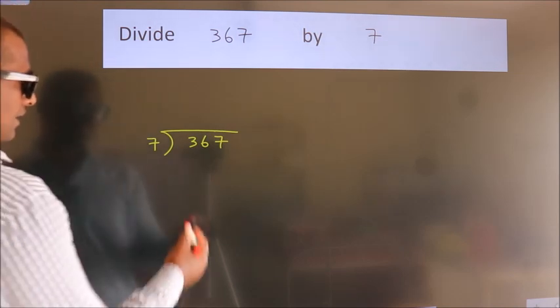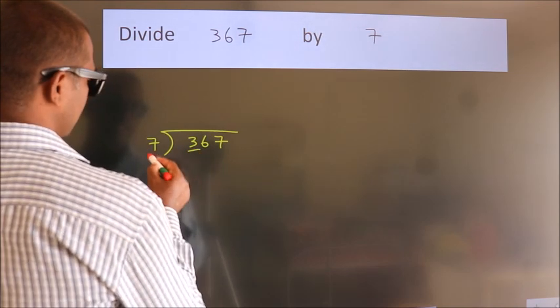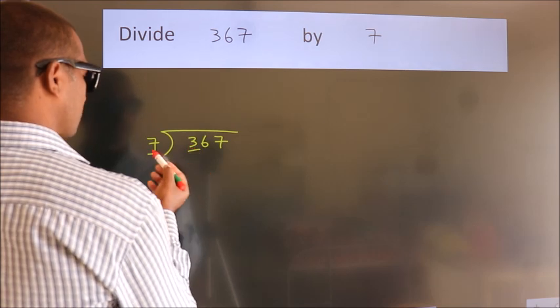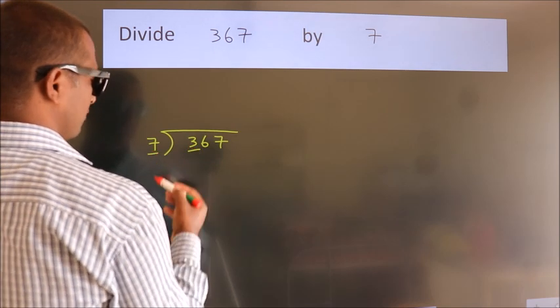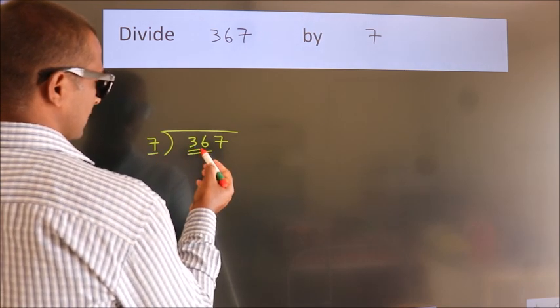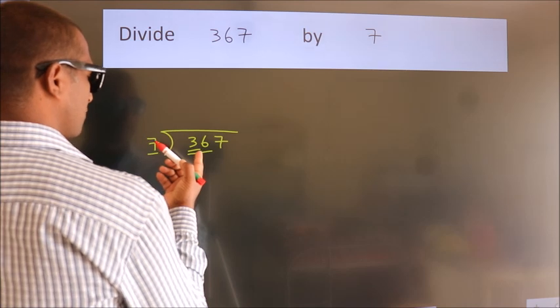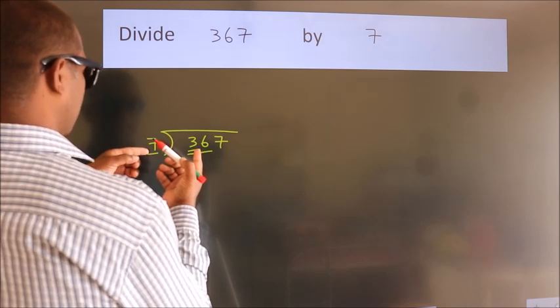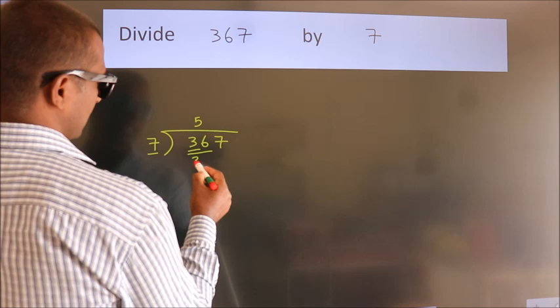Next, here we have 3 and here 7. 3 is smaller than 7, so we should take 2 numbers: 36. A number close to 36 in the 7 table is 7 fives, 35.